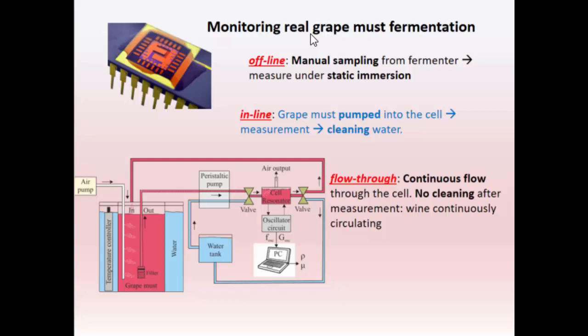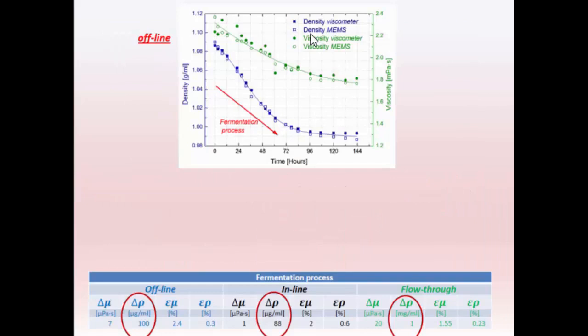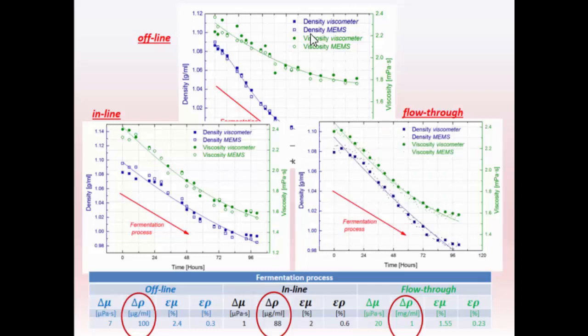So this is the comparison for three measurements. Here we compare the density and viscosity taken with our sensor and density and viscosity taken with a laboratory instrument. So this is for the offline, you have the solid points for the laboratory instrument and the open symbol for our sensor. This is the measurement for the inline which is also very precise and this is the result for the flow-through measurement. There is a cloud of points corresponding to measurement every one minute. So this compared to the values of the instrument from the lab taking every few hours.